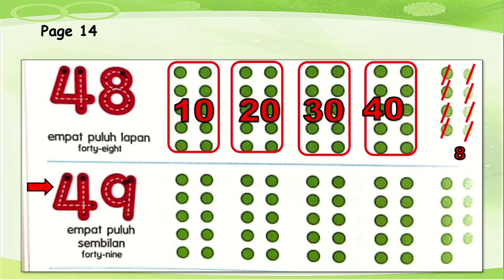The next one. Let's spell 49. F-O-R-T-Y, 40. N-I-N-E, 9. 49.